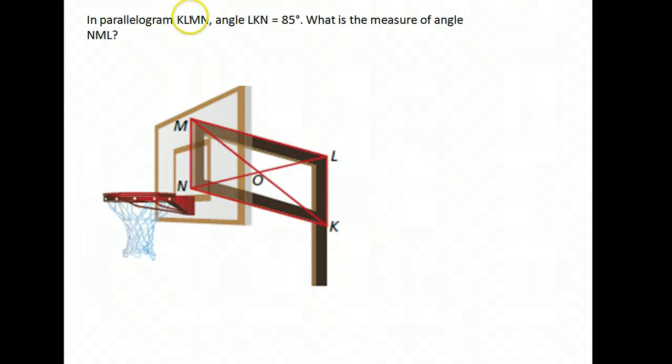Here we go. In parallelogram KLMN, angle LKN. So that's how we locate our angle. The letter in the middle is where it's located. So it's going to be located at K, specifically from L to K to N. This corner right here is an 85 degree angle. What's the measure of angle NML? Again, it's located where your middle letter in your name is. So it's right here, specifically N to M to L.